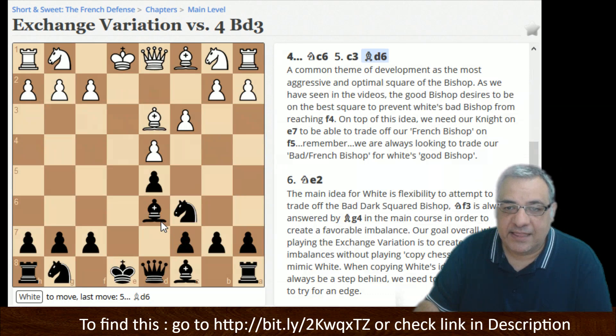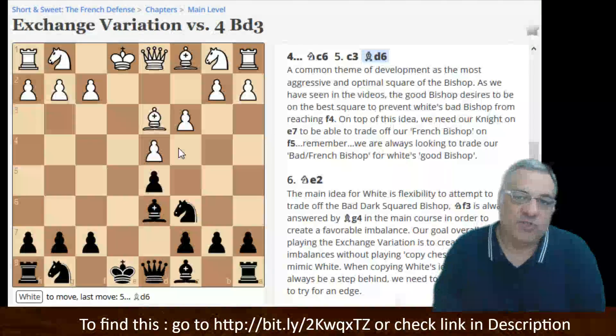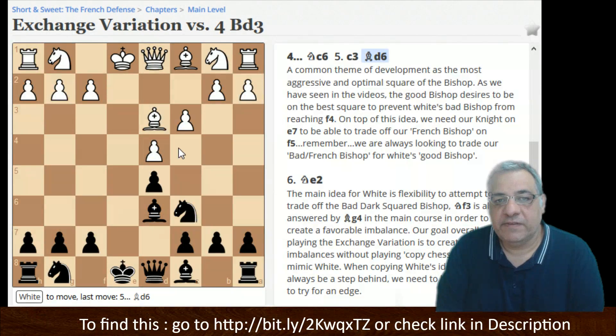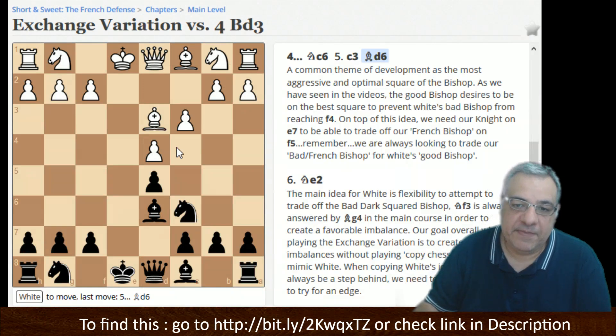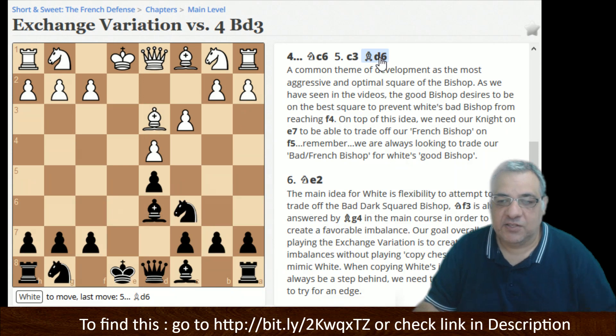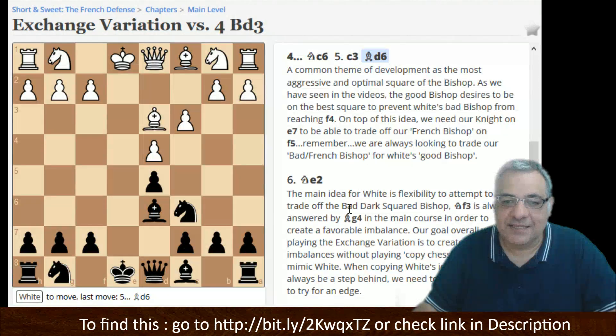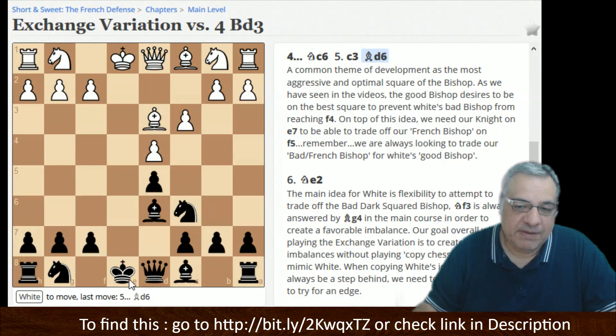Now here, the Exchange Variation is very important to address because a lot of players have gone off the French because they feel that the Exchange Variation white gets a kind of false draw. Brian has basically said the name of the game is to try and create some imbalances despite white trying for the symmetrical pawn structure.